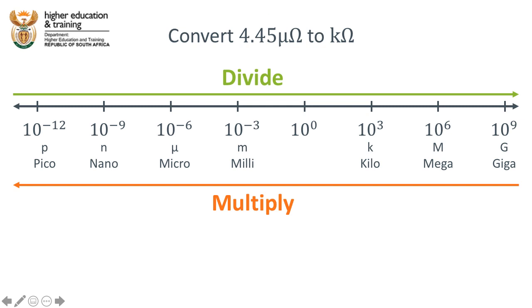In this video we're going to convert 4.45 micro ohms to kilo ohms. Let's first make a note of where we're moving on our number line. We're moving from micro ohms to kilo ohms, from a smaller unit to a bigger unit. In other words, we're going in the divide direction.